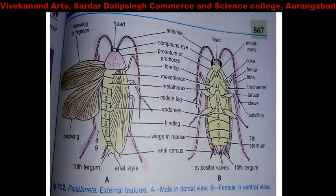The exoskeleton is formed by chitin. The dorsal plate is called the tergite or tergum. The thoracic terga are also called nota.